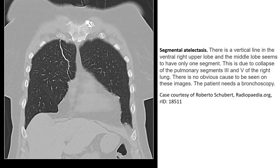Subsegmental atelectasis. On CT, a vertical line in the ventral right upper lobe and middle lobe seems to involve only one segment. It is due to collapse of pulmonary segments three and five of the right lung. There is no obvious cause seen on this image.